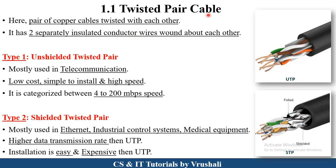The first type is twisted pair cable. There are some copper cables and these cables are twisted with each other. The first type of twisted pair cable is unshielded twisted pair cable. This unshielded twisted pair cable is used mostly in telecommunication networks, where multiple telephone lines are connected through this cable. It requires very low cost, is easy to install, and provides high speed. It is categorized by speed, ranging from 4 Mbps up to 200 Mbps.